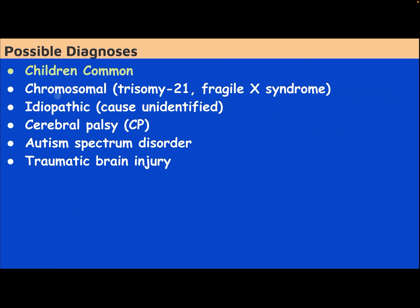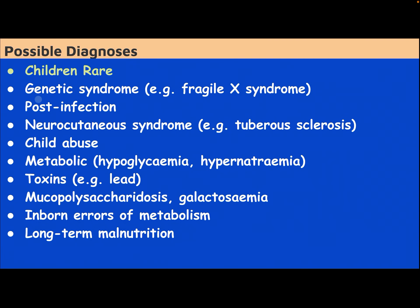Common causes in children: chromosomal trisomy 21, Fragile X syndrome, idiopathic (cause undefined), cerebral palsy, autism spectrum disorder, traumatic brain injury. Rare causes in children: genetic disorder, post-infection, neurocutaneous syndrome, tuberous sclerosis, child abuse, metabolic causes such as hypoglycemia and hypernatremia, toxins like lead, mucopolysaccharidosis, galactosemia, inborn errors of metabolism, and long-term malnutrition.